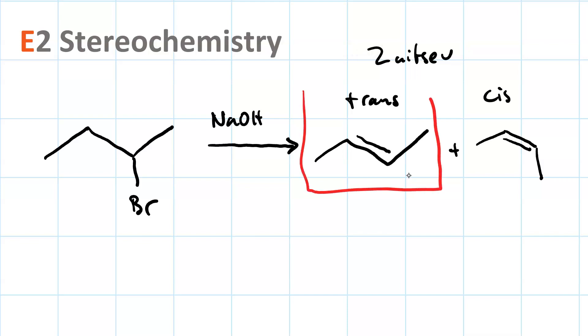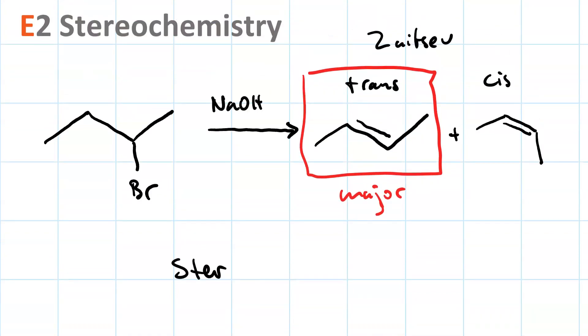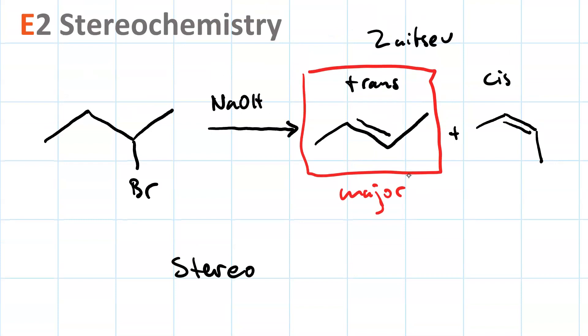Which one will be more prevalent and why? Turns out the trans is major because it's more stable. You'll get a small amount of cis product. So in this way we say E2 reactions are stereoselective. Trans is favored over cis, so trans is selected for.